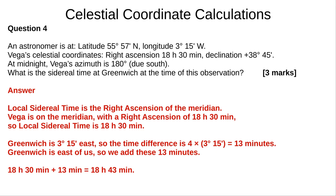We want to find Greenwich sidereal time, but first we're going to need to find local sidereal time. Local sidereal time is the right ascension of the meridian, and we know that because Vega is on the meridian — since it's exactly due south — and Vega's right ascension is 18 hours 30 minutes. That means local sidereal time is also 18 hours 30 minutes. Now we need the time difference between us and Greenwich. Our difference in longitude is 3 degrees 15 arc minutes, and each degree of longitude is 4 minutes of time. So 3 degrees and 15 arc minutes times 4 equals 13 minutes of time difference. Since we're west of Greenwich, Greenwich is east of us — eastern locations are later — so we add those 13 minutes. Our local sidereal time is 18 hours 30 minutes; add 13 minutes, and Greenwich sidereal time is 18 hours 43 minutes.